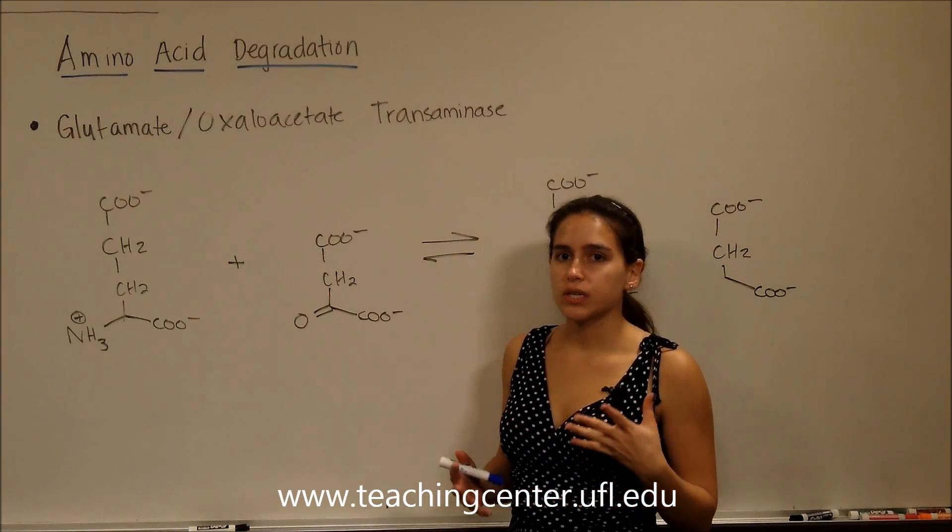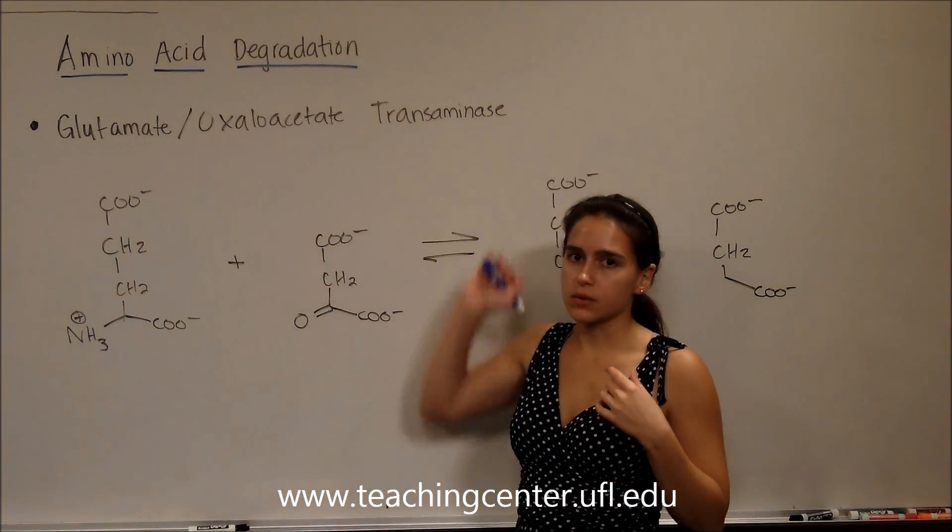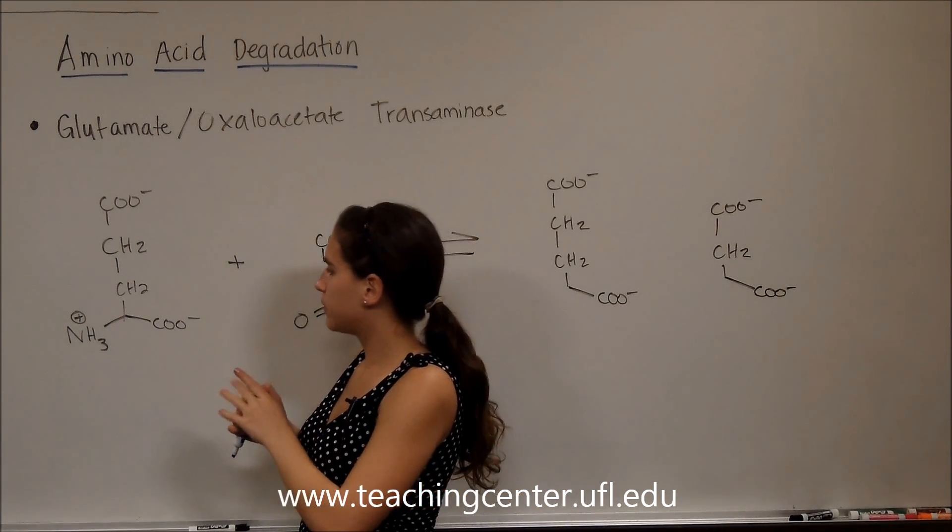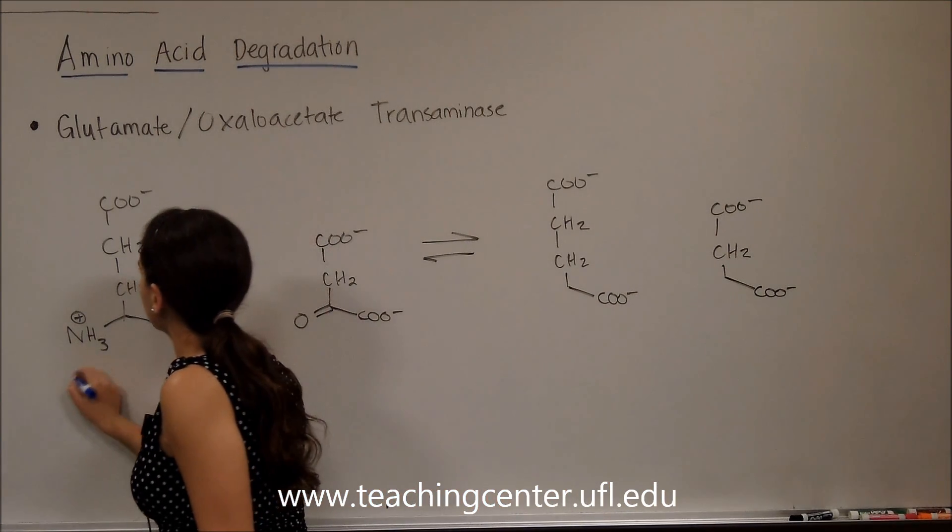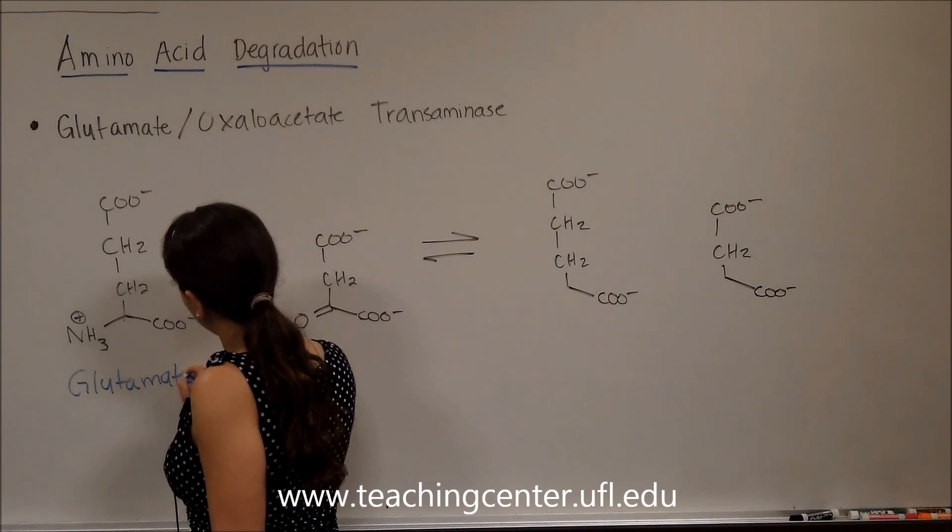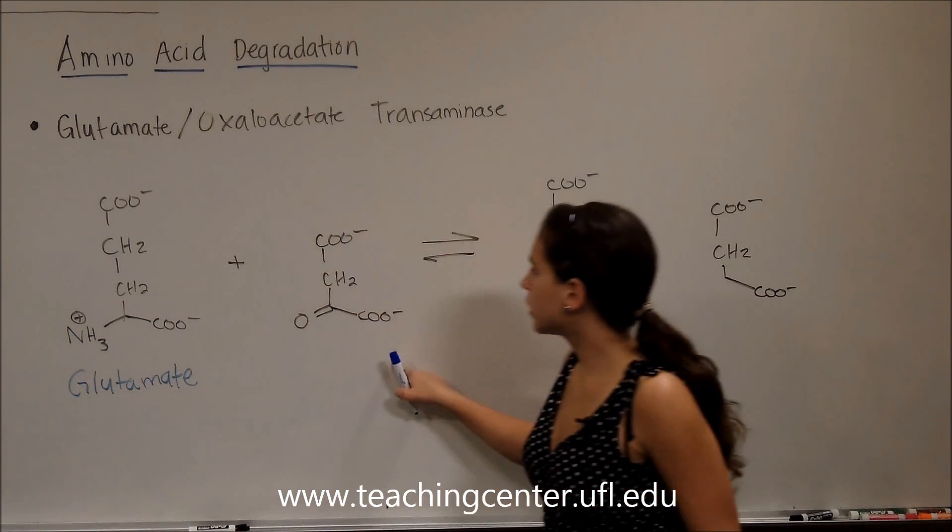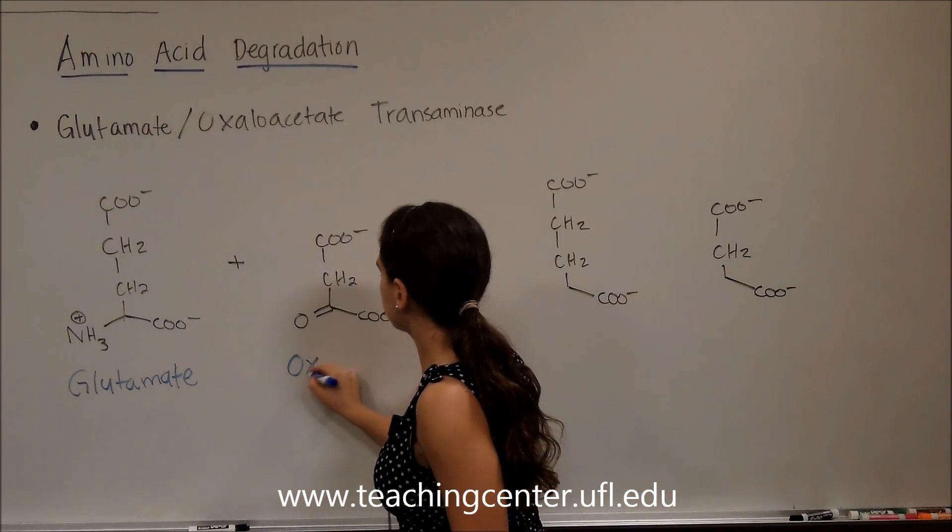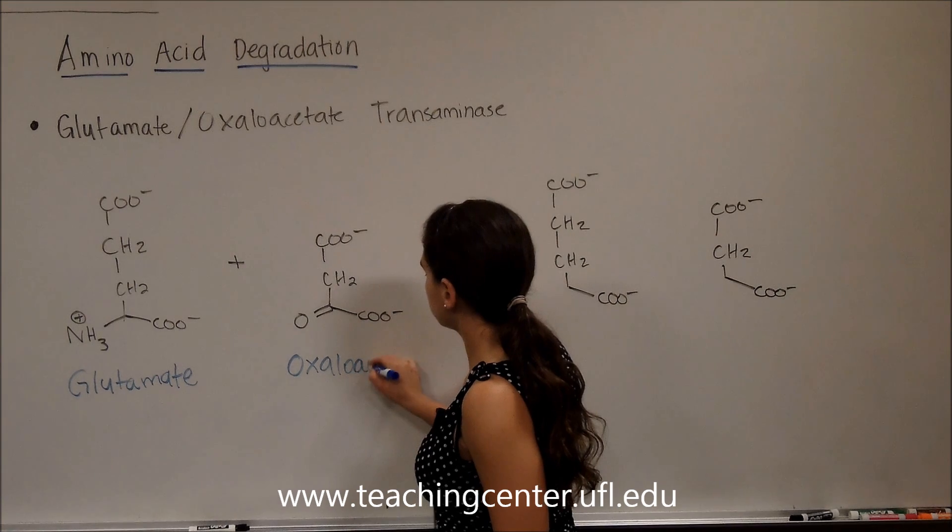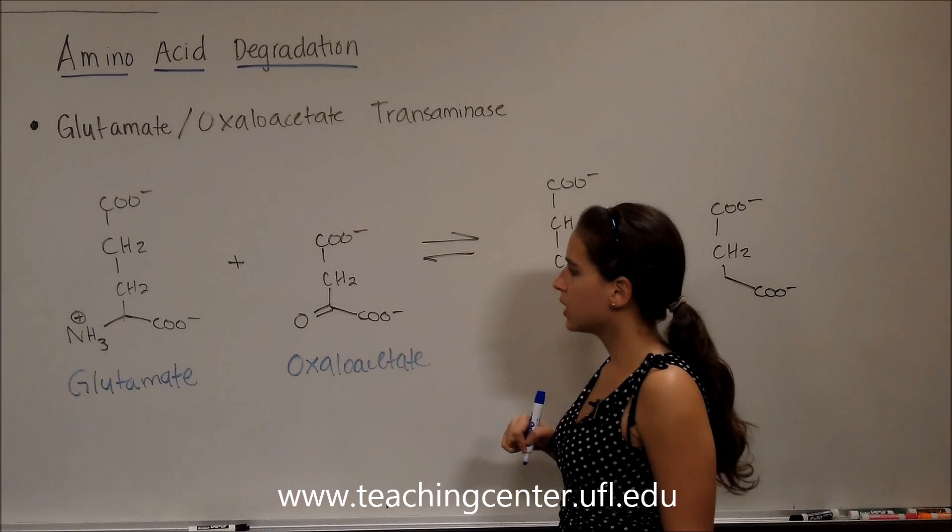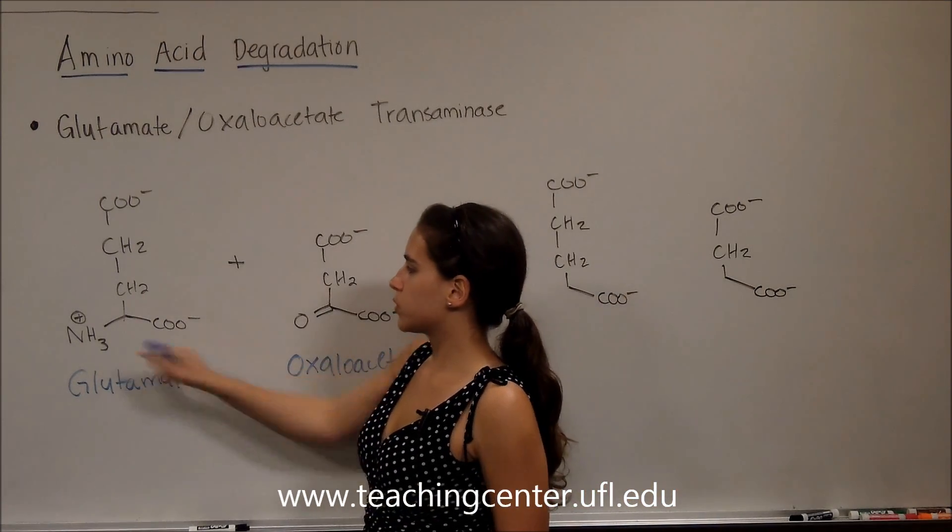Our next example is the glutamate oxaloacetate transaminase. So here, we have our amino acid glutamate. Let's label that glutamate. And over here, we have oxaloacetate. Yeah, we know this because it has four carbons, right?